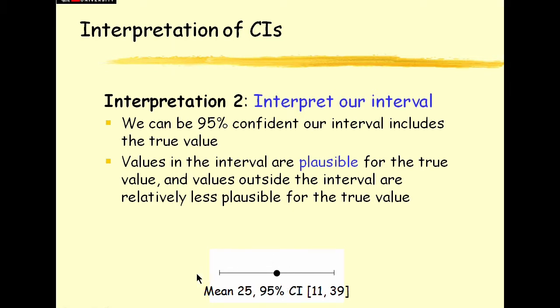Values outside are relatively implausible, although ones close to the interval are not impossible. So that's our second interpretation.